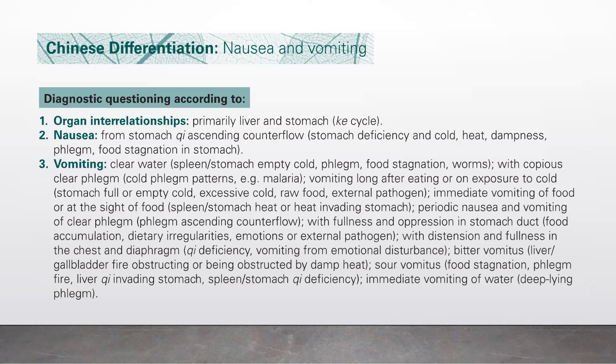Immediately vomiting of food, or vomiting at the sight of food: spleen, stomach heat, or heat invading stomach. Periodic nausea and vomiting of clear phlegm indicates phlegm ascending counterflow. With fullness and oppression in the stomach — food accumulation, dietary irregularities, emotions, or external pathogen. With distension and fullness in the chest and diaphragm: chi deficiency, vomiting from emotional disturbance.